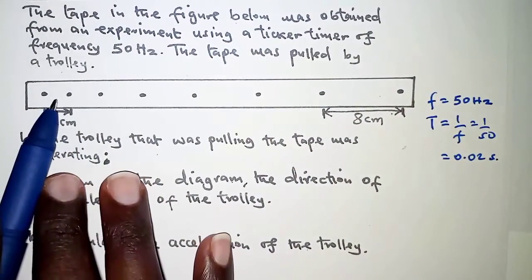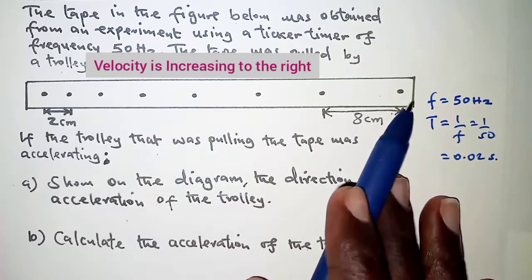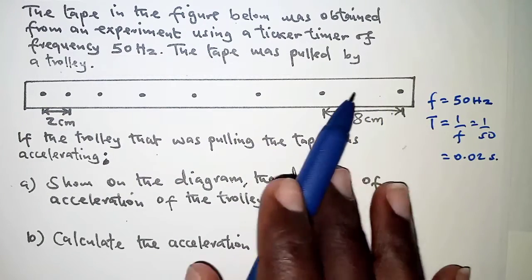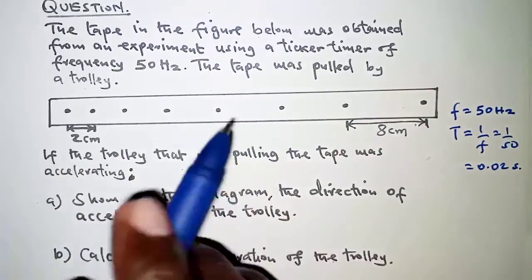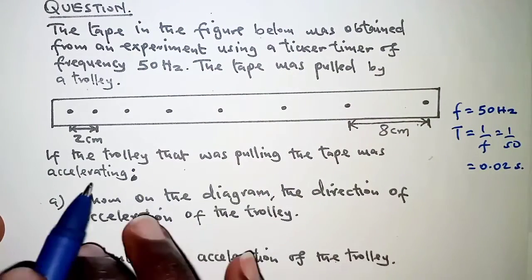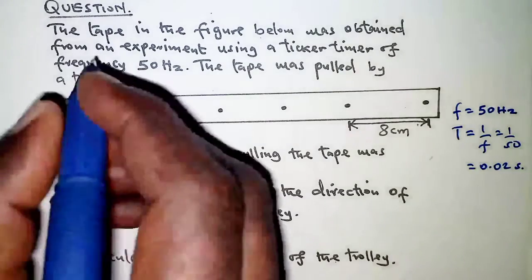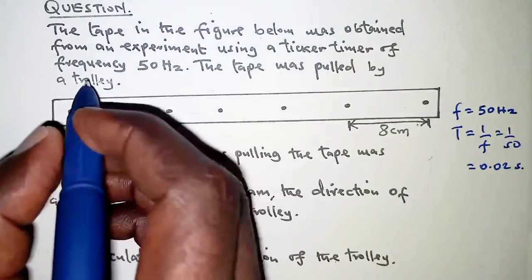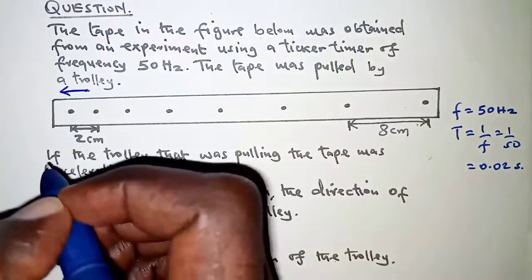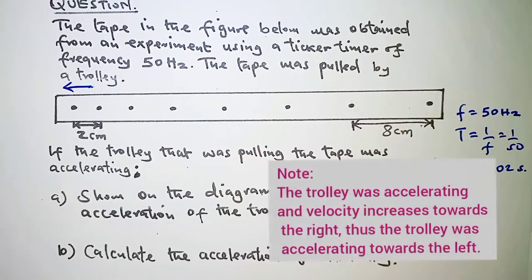Since the velocity is changing as you move towards the right, that means the tape must have been pulled in this direction. So the trolley that was pulling the tape was accelerating in this direction — that is the direction of the trolley's acceleration.